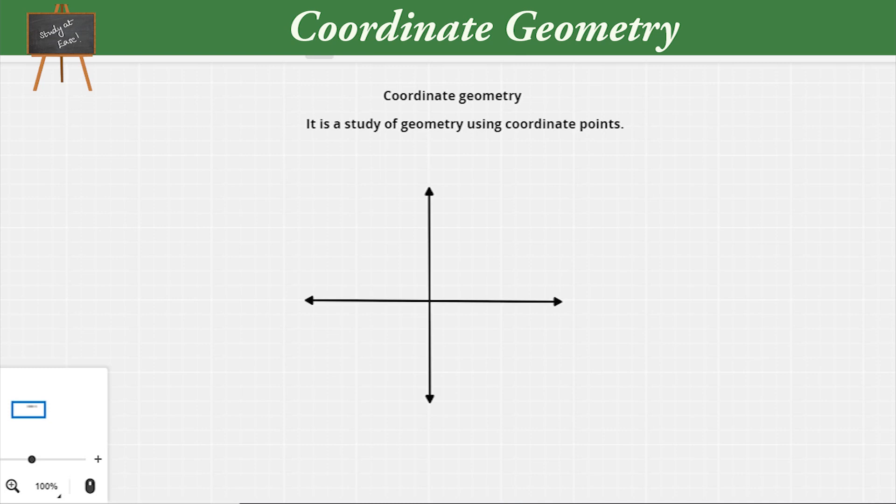Now where do we apply these? Coordinate geometry is used in locating different objects with respect to a reference point. As you see in this picture, we have two axes, those are two perpendicular lines which cross each other.